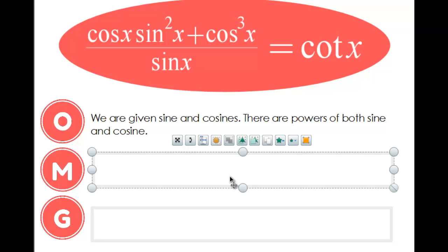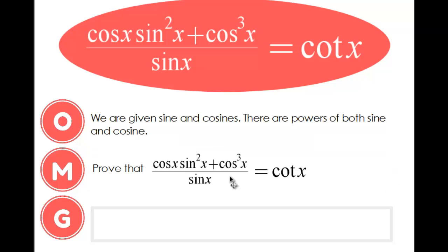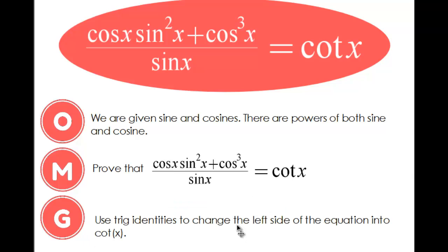My mission is to take the entire left side and make it look like the right side. So take all of that and turn it into cotangent. My game plan for doing this is going to be to use trig identities and start on the left side instead of the right side.